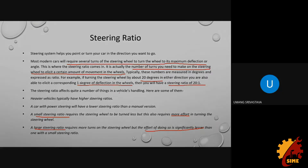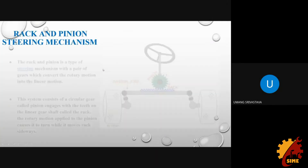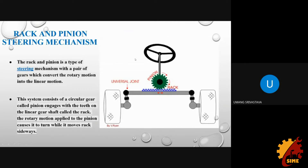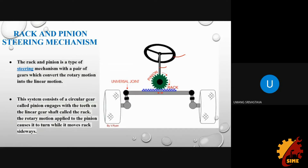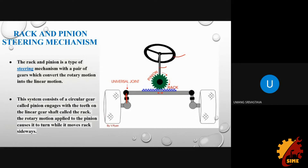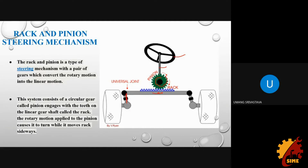The first steering mechanism is rack and pinion. It consists of a steering wheel and steering column, with a pinion attached to the steering column. The pinion engages with a rack, which is connected to the drag link and tie rod, steer arm, and then the tires. Rack and pinion is a type of steering mechanism with a pair of gears that converts the rotary motion of the steering wheel, transferred to the pinion, into linear motion via the rack to turn the wheels.